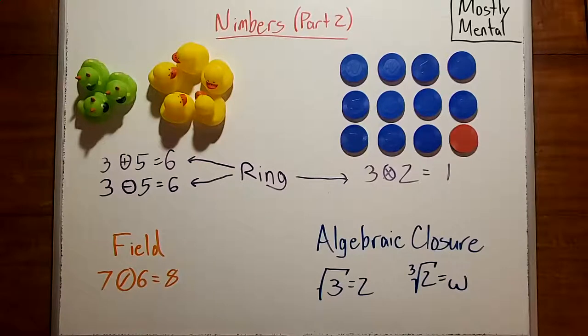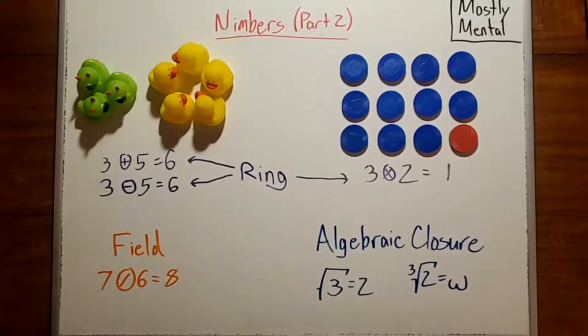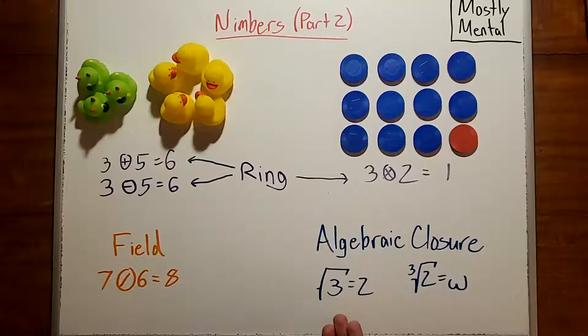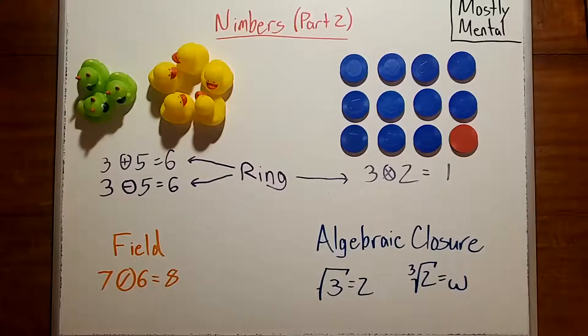But it's not just a ring. We can divide nimbers, which makes it a field. And it's not just a field. We can take square roots. And once we throw in transfinite ordinals, we can even solve polynomials, which makes the nimbers an algebraically closed field. That's a lot of beautiful structure hiding just beneath the surface. Let's dive in and see.